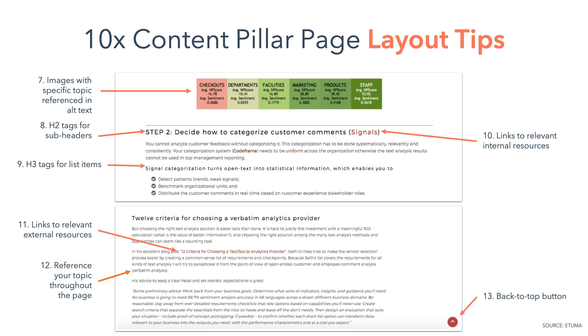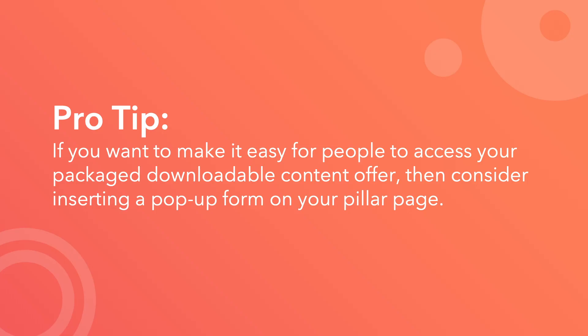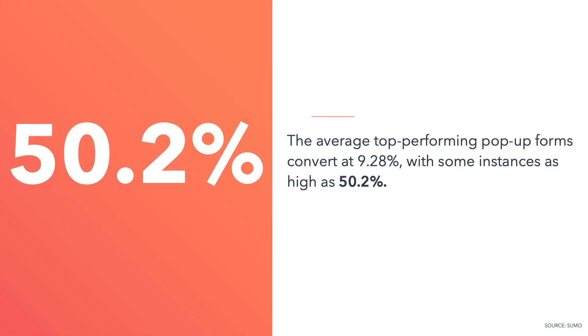Pro tip: if you want to make it easy for people to access your packaged downloadable content offer, consider inserting a popup form on your pillar page. The average top-performing popup forms convert at 9.28%, with some instances as high as 50.2%. To put that into perspective, if you get even 150 visitors per day to your site, you'd have 418 signups in a month.